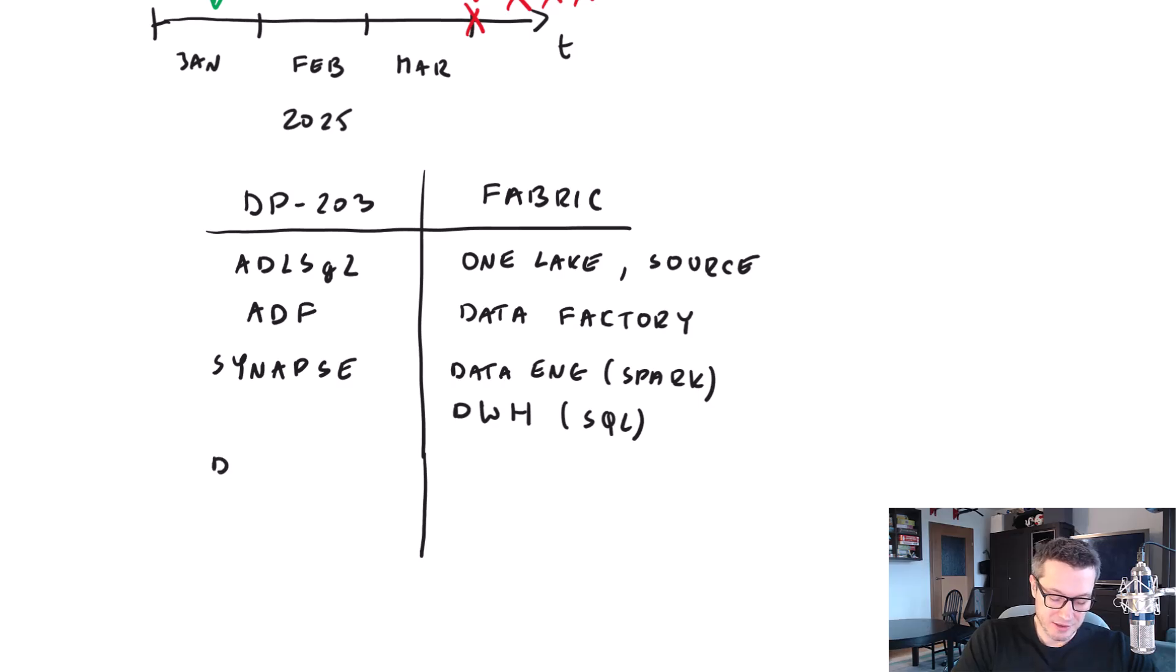Then we had, or we still have, Databricks as a part of the DP-203 exam. And now in Fabric, it is no longer applicable. Why? Because simply put, Databricks is a competitor of Fabric. Databricks wants to be this end-to-end data analytics platform, just like Fabric. It shouldn't be a surprise for you that Microsoft doesn't want you to learn about their competitor. So it is no longer applicable. But Databricks is widely used around the world, so knowing this stuff will be useful for you for sure.